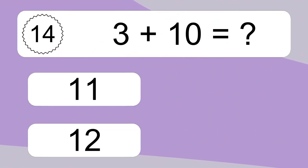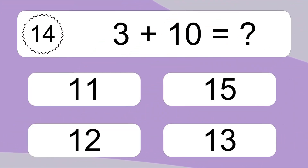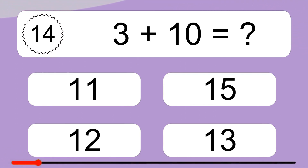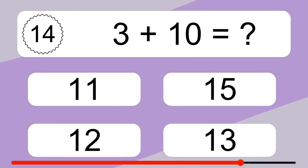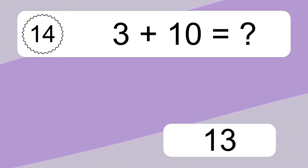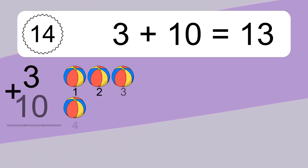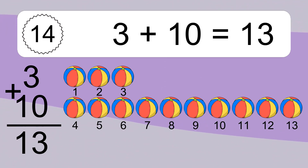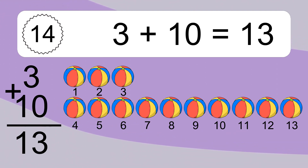3 plus 10 equals what? 3 plus 10 equals 13. Let's count it. 1, 2, 3, 4, 5, 6, 7, 8, 9, 10, 11, 12, 13.